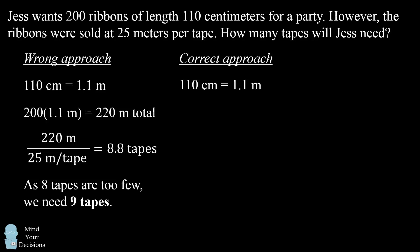Each tape has 25 meters, so we need to take the 25 meters per tape and divide it by the 1.1 meters per ribbon. We end up that each tape can produce 22 whole ribbons plus an excess amount.